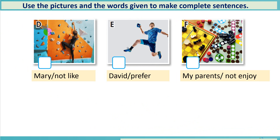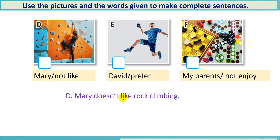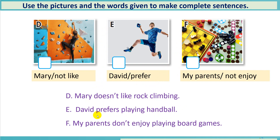We continue with picture D — Mary, not like. Picture E — David, prefer. Picture F — my parents, not enjoy. You have one minute. The correct answer for picture D: Mary doesn't like rock climbing. Picture E: David prefers playing handball. Picture F: My parents don't enjoy playing ball games.